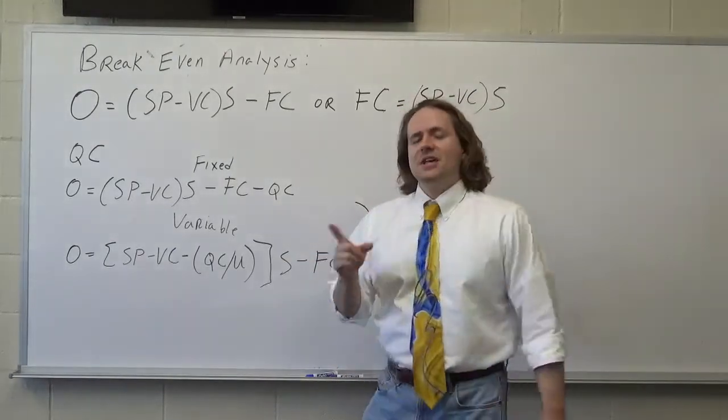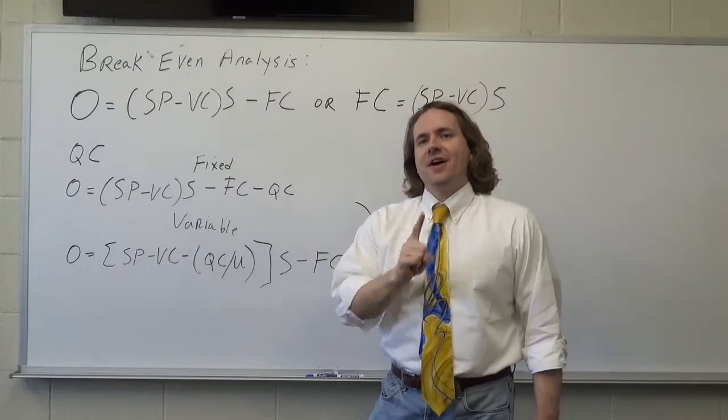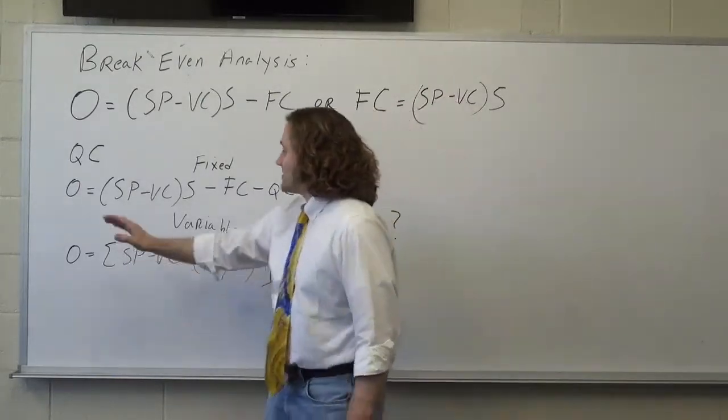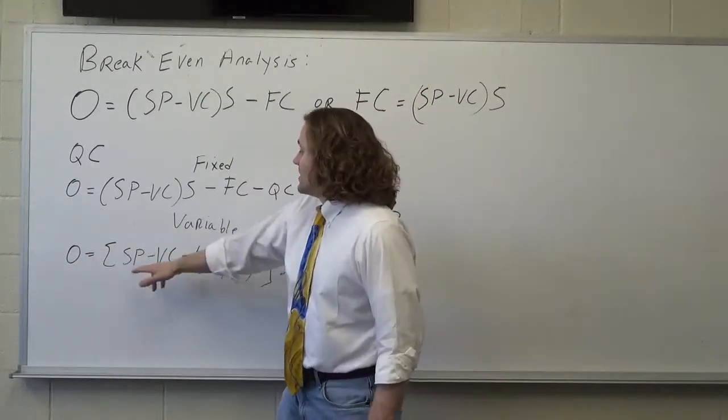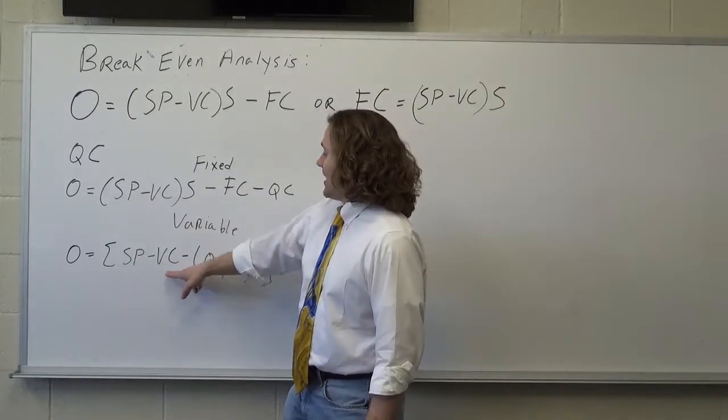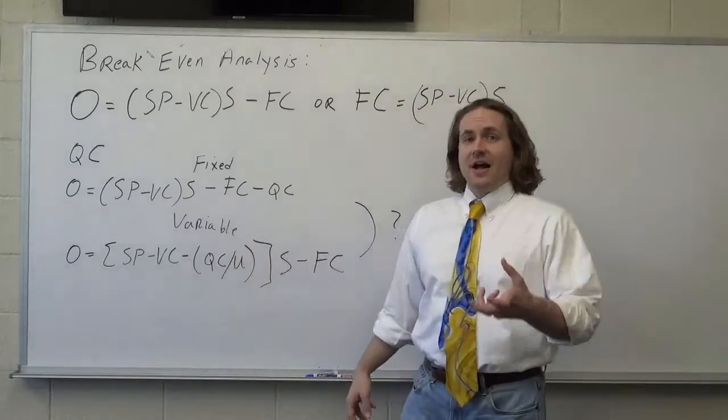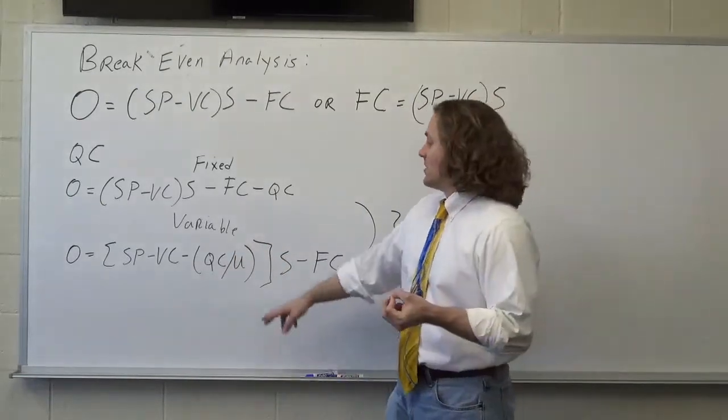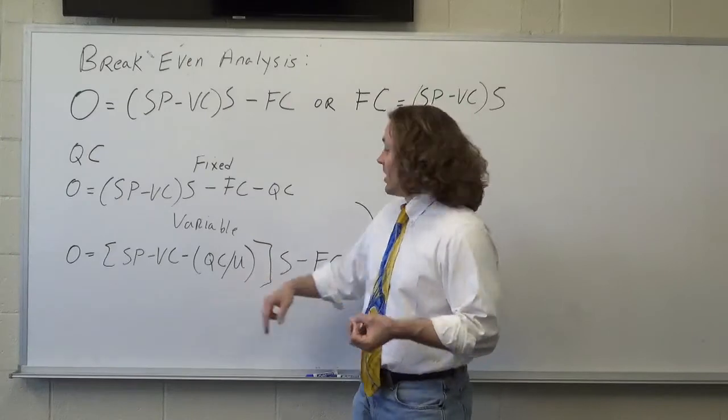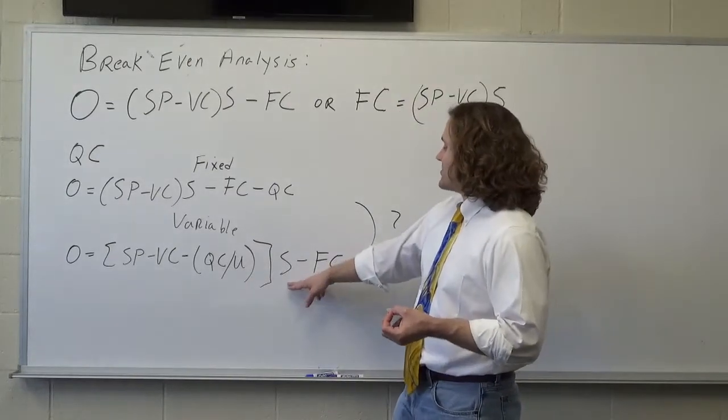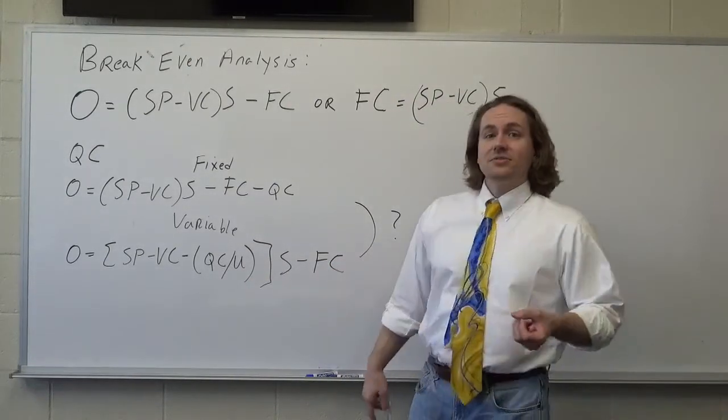Now, let's say you choose to interpret that as a variable cost. Same thing, zero equals selling price minus variable cost minus the questionable cost divided by the number of units for which this would be a questionable cost times the number of sales minus the fixed cost.